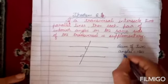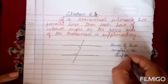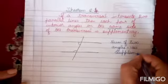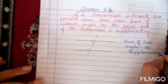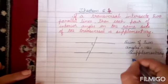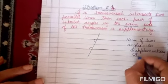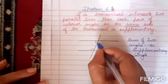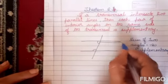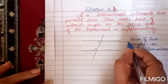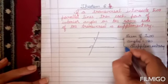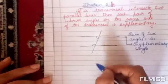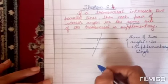The sum of two angles equal to 180 degrees — it's called a supplementary angle. So these two angles are known as supplementary.